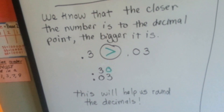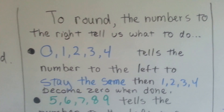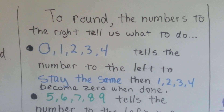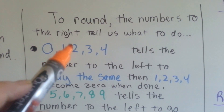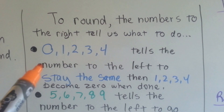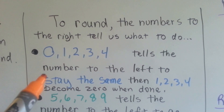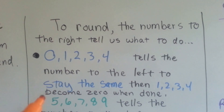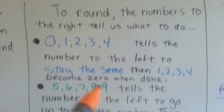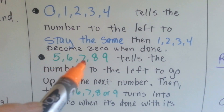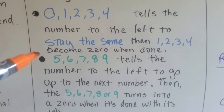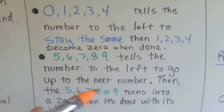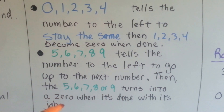This will help as we round the decimals too. Do you remember the rounding rules? To round, the numbers to the right tell us what to do. Zero, one, two, three, four tells the number to the left to stay the same, and then it becomes a zero when it's done. And if it's a five, six, seven, eight, or nine, it tells the number to its left to go up to the next number, and then it turns into a zero when it's done with its job.